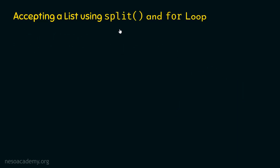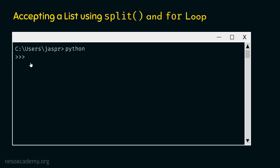In the last presentation, we understood how to accept a list using the split method. We received a list using split, but that list consists of strings and not integers — that was the problem we faced. Now we will understand how to leverage the power of for loop to convert individual items of the list to integers. We will first accept a list using split, and then use a for loop to convert each item of the list to integer.